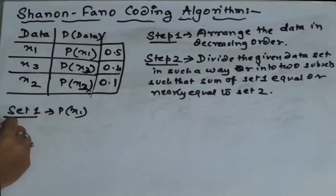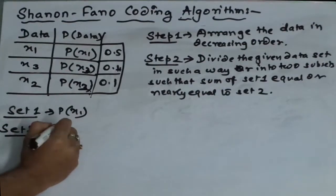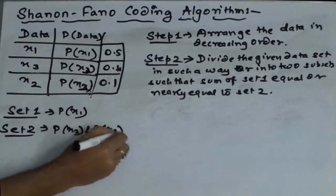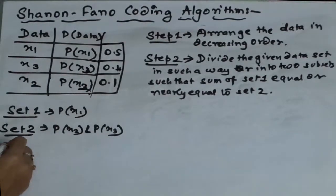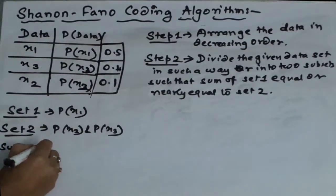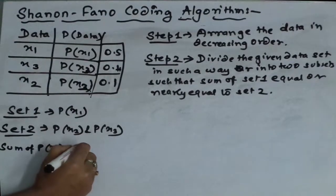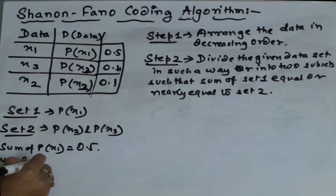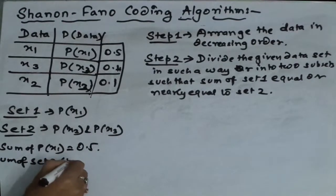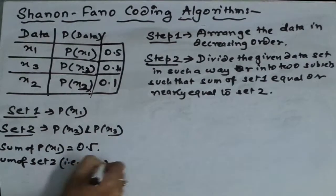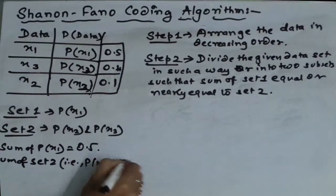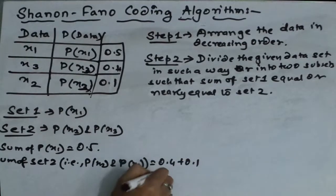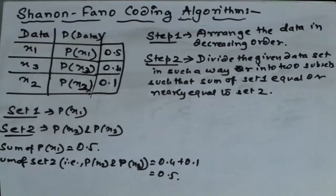I am approaching for equal and set two is p of x2 and p of x3 because as you can see, the sum of set one is equal to 0.5 and sum of set two, that is p of x2 and p of x3, is equal to 0.4 plus 0.1 which is equal to 0.5.